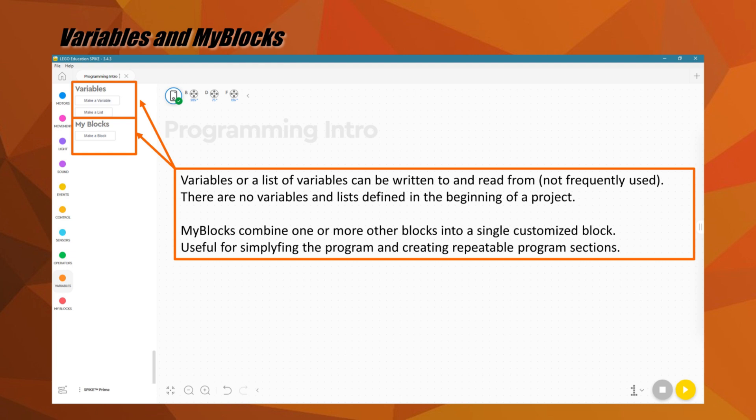The dark orange category is for variables. At the start of a new project, there are no blocks in this category, but from here you can create variables or make lists of variables that can be written to and read from in multiple places in the program. We have not yet needed to use these for our programs.